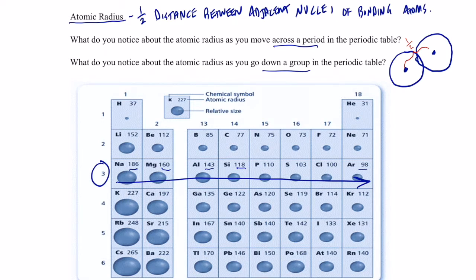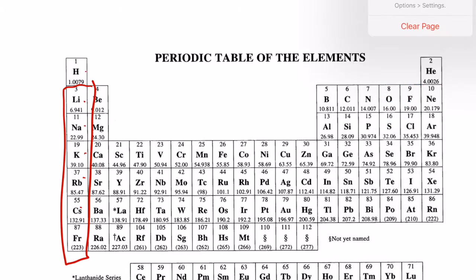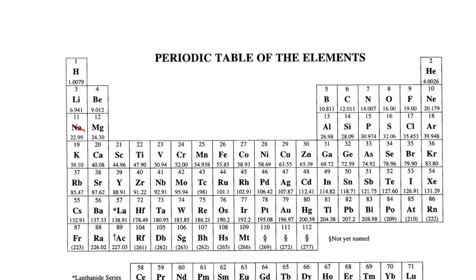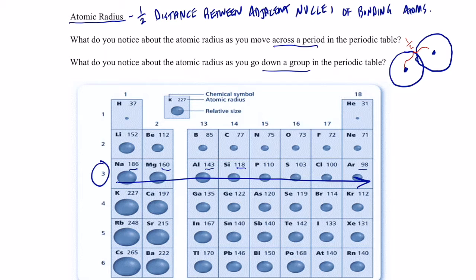That's very difficult for some students to grasp. When you look at the periodic table and go from sodium with an atomic mass of 23 all the way across to argon with an atomic mass of almost 40, the atomic mass increases. A student might expect that as atomic mass increases, the atomic radius would also increase — but in fact, the atomic radius actually decreases when you go across a period.